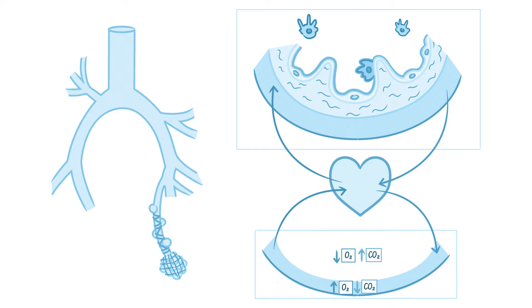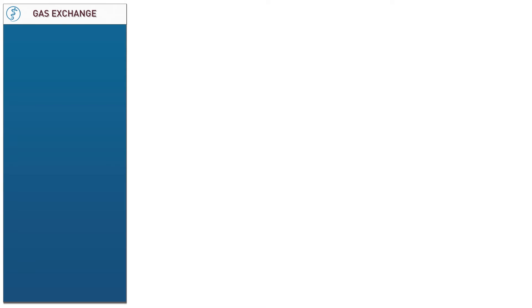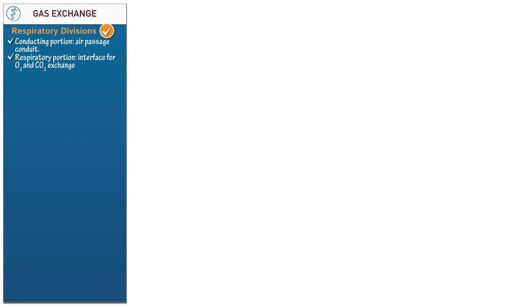Here we'll learn about gas exchange in the lungs, which occurs in the respiratory portion of the lungs. Start a table so we can review the functional divisions of the respiratory system. Note that the respiratory system divides into a conducting portion — the air passage conduit which air passes through — and the respiratory portion, which is the interface of oxygen and carbon dioxide exchange; it's the site of gas exchange. Now let's draw an overview of the respiratory tract.